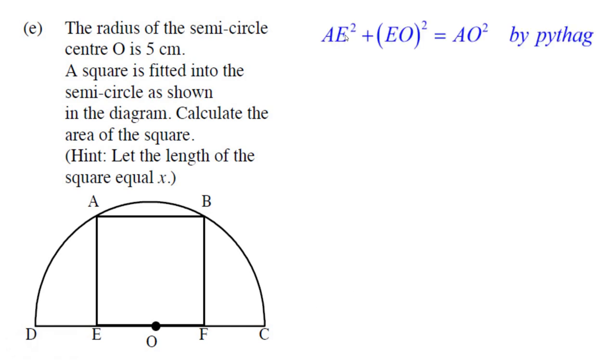And so we know that AE squared plus EO squared equals OA squared by Pythagoras.